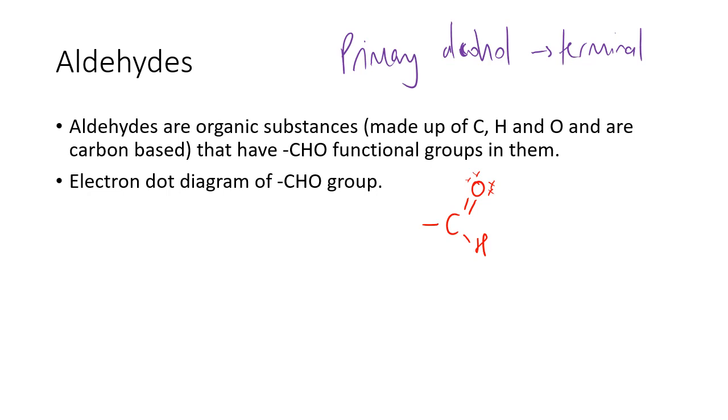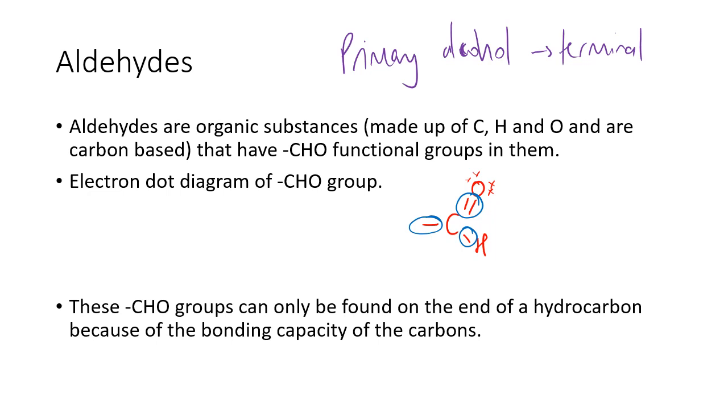Carbon can only have four bonds coming out of it. There's two there, there's one there, and so therefore there's only one left to bond to the rest of the chain. Again, you can only find these on the end of hydrocarbons because of the bonding capacity.